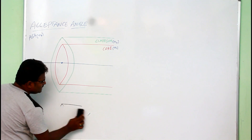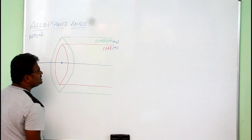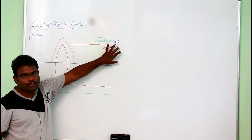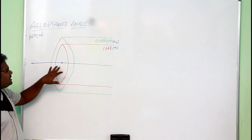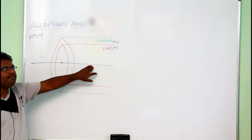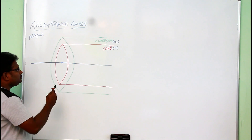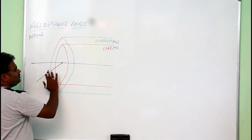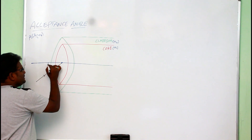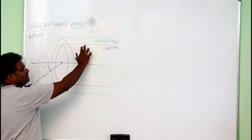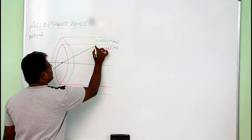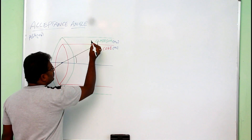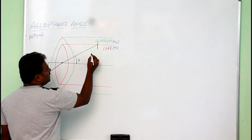To understand this acceptance angle, or to derive an expression for it, let us take an optical fiber having a core of refractive index n1 and cladding of refractive index n2, which is kept in air. This line is known as the axis of the fiber optics. Now from outside, incident a light ray from one end of the optical fiber with an angle of incidence i. Since light will never travel straight, it bends and travels because it is moving from one medium to another medium.